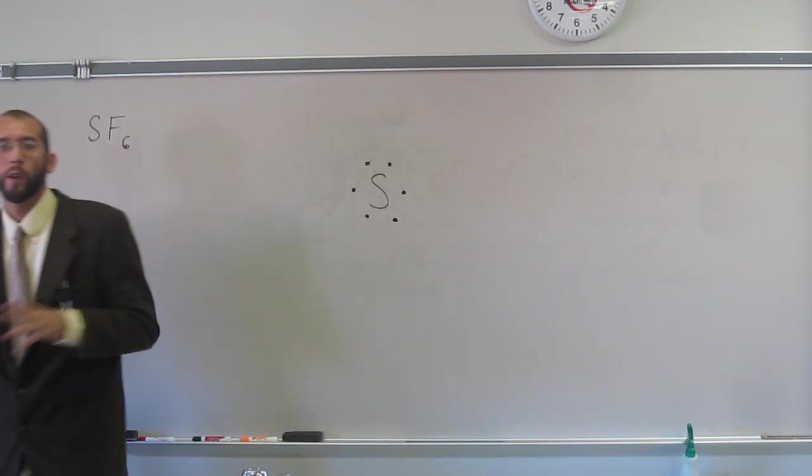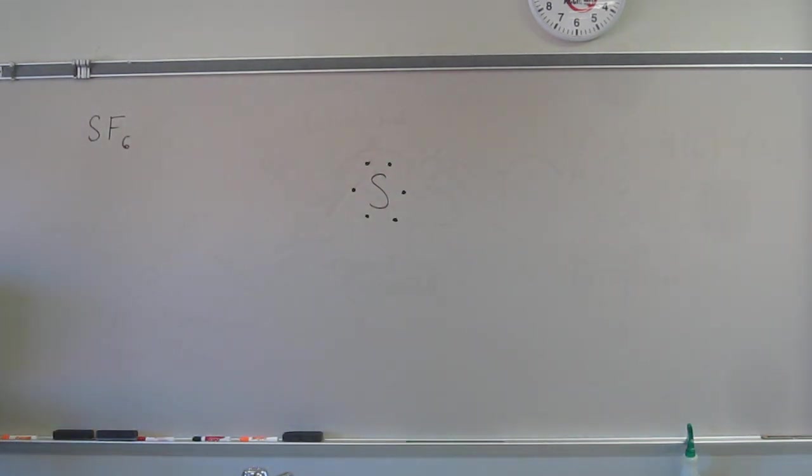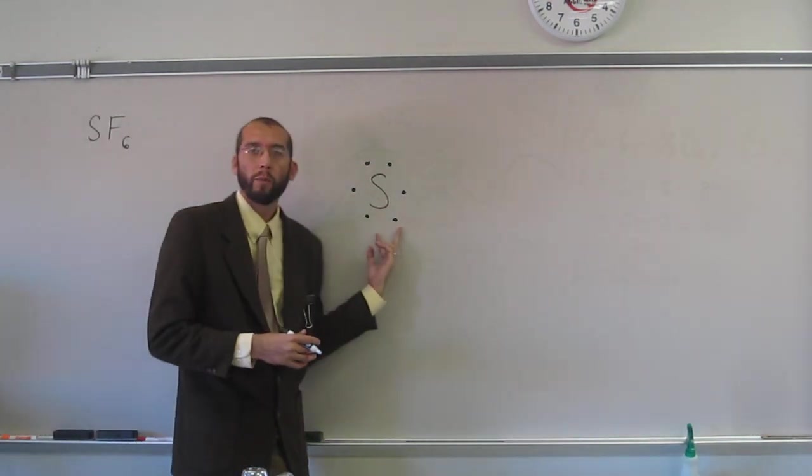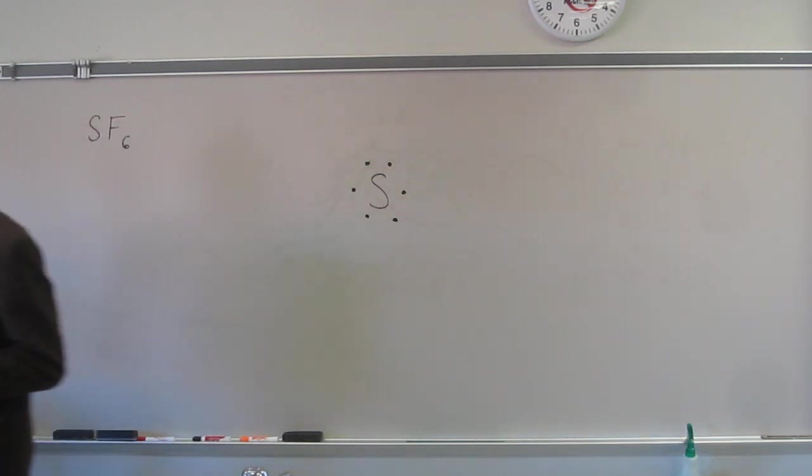So when something expands its valence, when an atom expands its valence, or central atom expands its valence, what it actually does is it will split up those two electrons and actually allow them to bond separately.